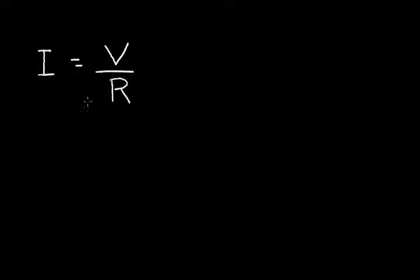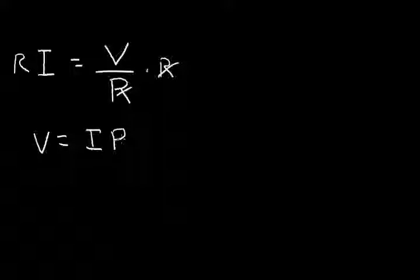Now we can represent Ohm's law in terms of voltage. Let's multiply both sides by resistance. And our R's cancel. We're left with voltage is equal to current times resistance.